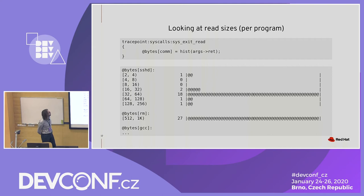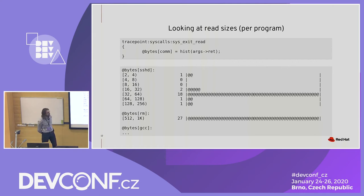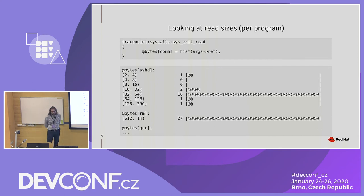Of course, we can combine together the features we've seen. If we take the previous example, we can now differentiate the output depending on the command name. So now we have a histogram for each program that's running. The output is going to be pretty long. But imagine you're only interested in one program — say, GCC. You can filter on it. You could put any statement into your action block, but there's actually a better way to do that.